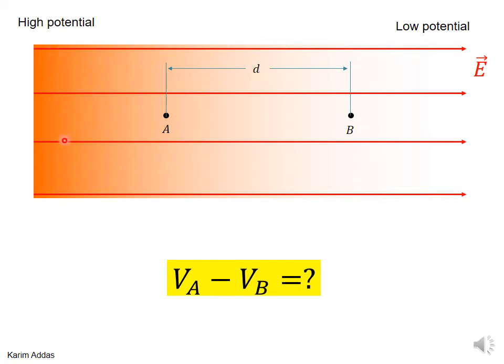The color here, the dark color that becomes light as you go to the right, determines the potential. This shows that this region has high potential and then as you go to the right it gets to low potential.